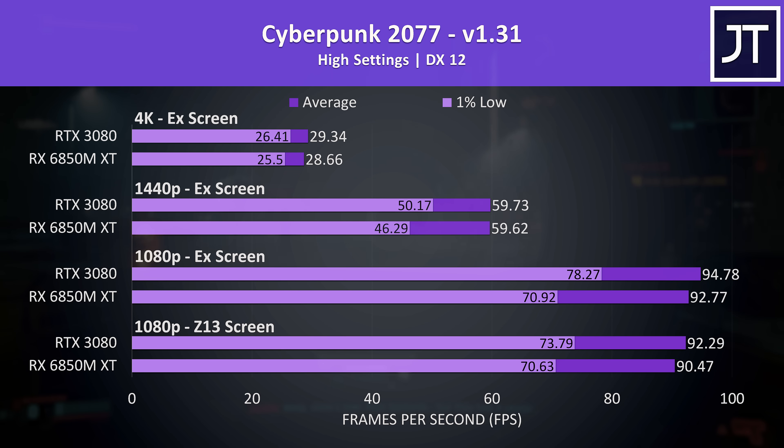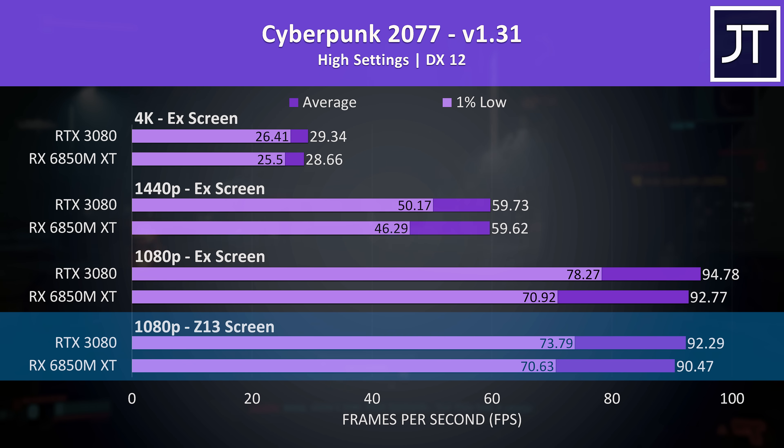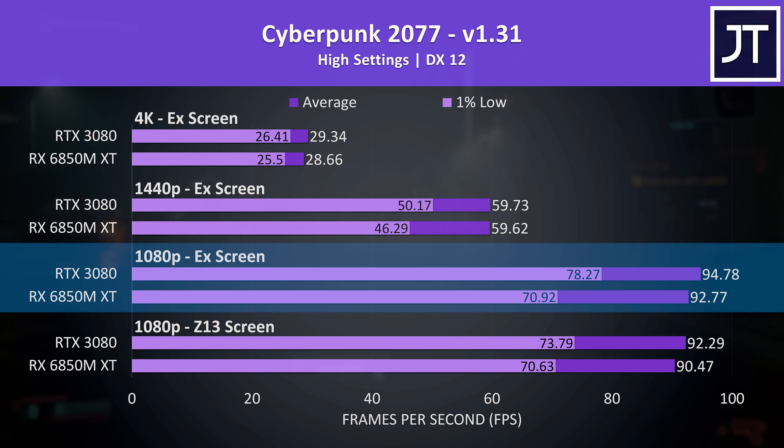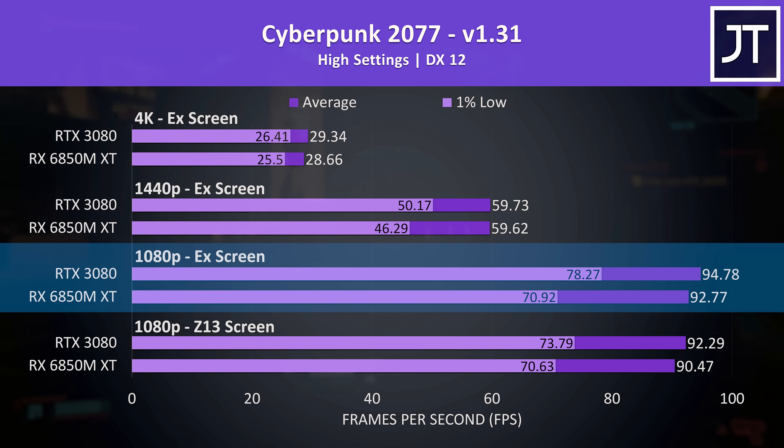It would have been cool to compare the best options from both Nvidia and AMD, but as I've already shown in other videos, the difference between the 3080 and the 3080 Ti seems pretty small on the laptop side anyway. At the bottom we've got 1080p results run off the Z13 screen, then 1080p results with an external screen connected to the XG Mobile just above, tested both because sending the display signal back from the GPU adds overhead.